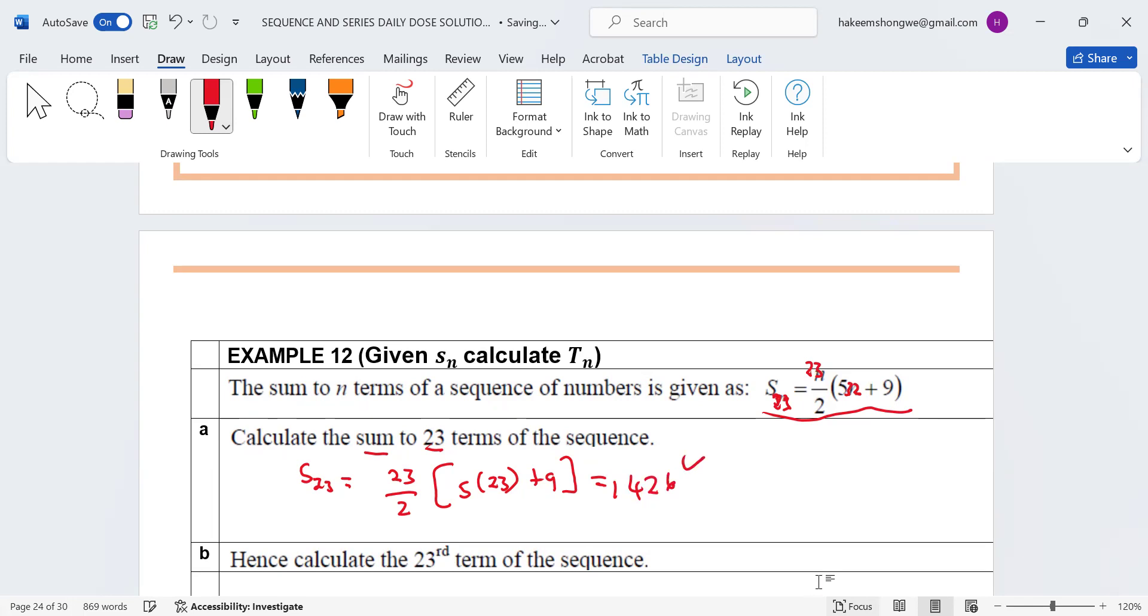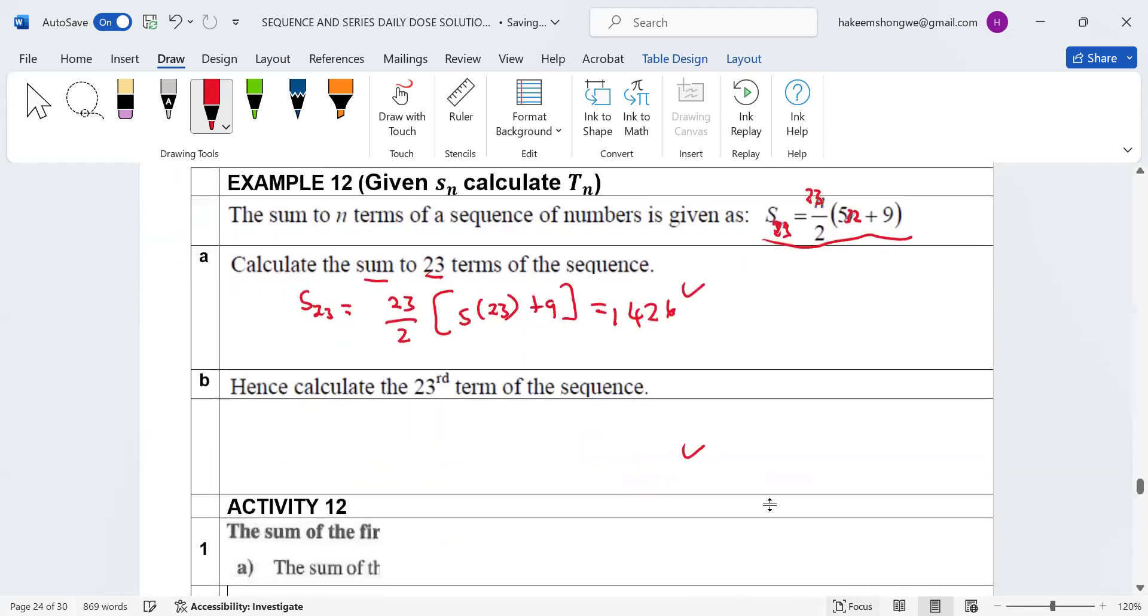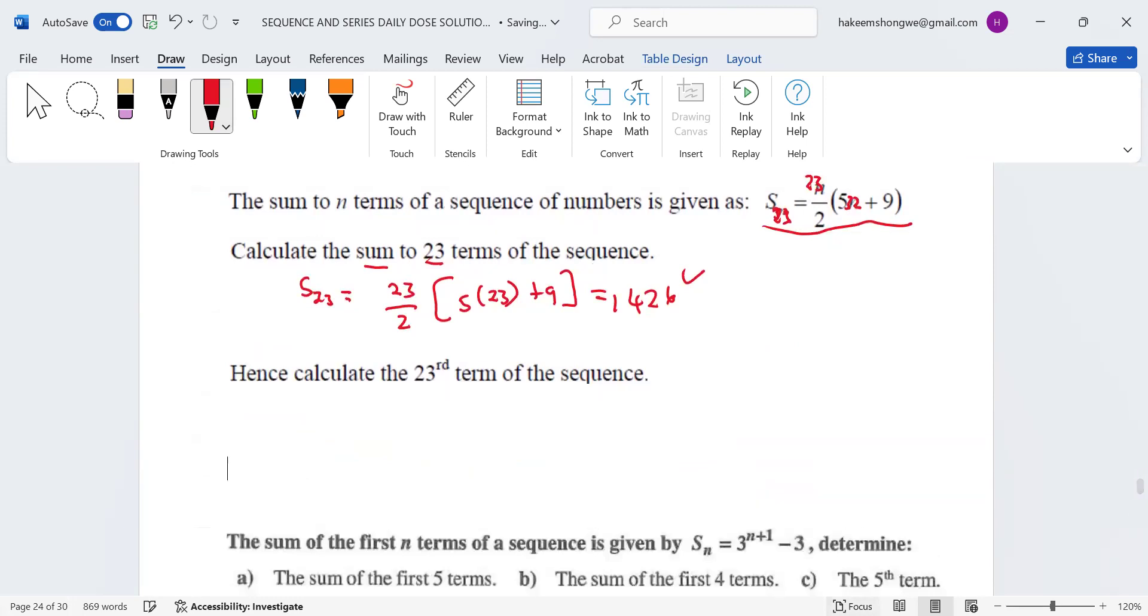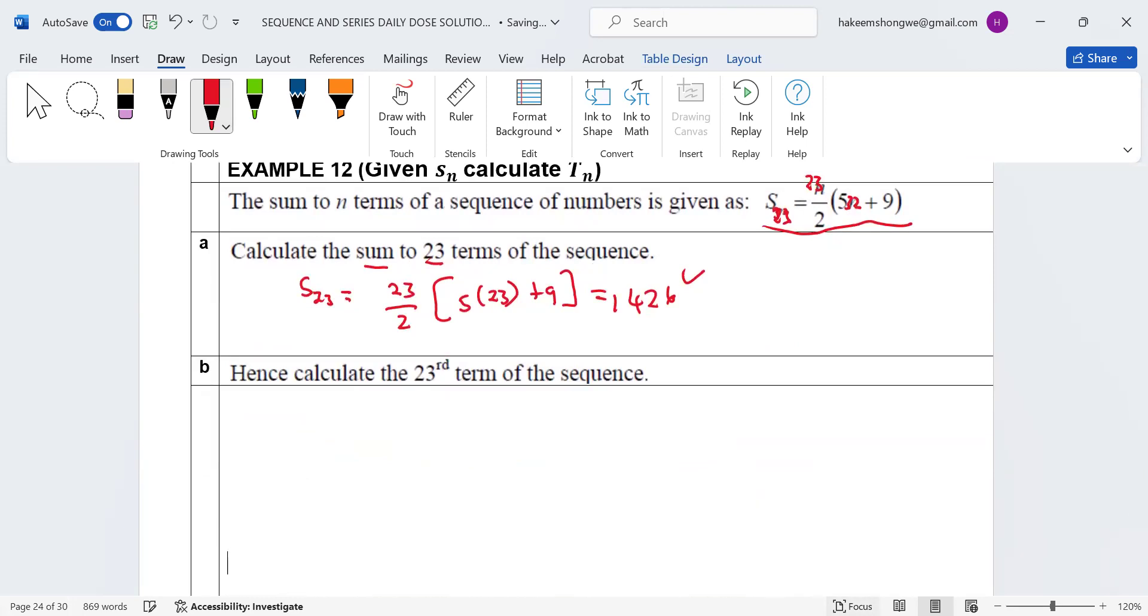The one that was interesting is this one. What happens if they say we should determine term number 23? If a learner wants to get term number 23, this is Sn, and then they can take the sum of the first 23 terms, they can do it, yes. But a learner cannot get term number 23 this way.